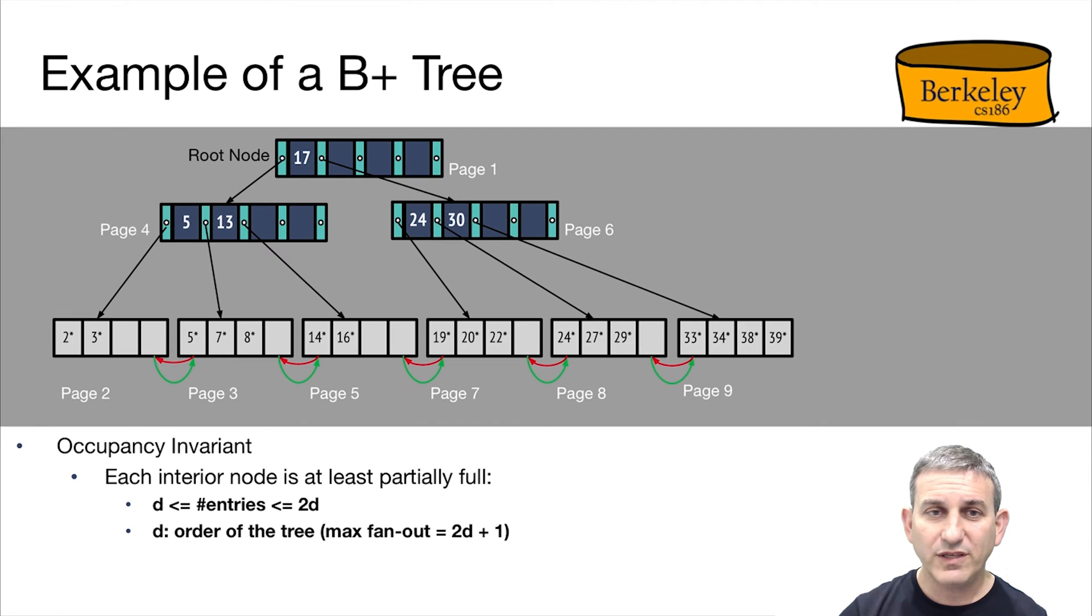Here's an example of a B-plus tree. One of the interesting facts about a B-plus tree is that it has an occupancy invariant. We didn't have this with ISAM, so it's an invariant rule that says the occupancy or the fill factor of each node must be at least one-half the capacity of the node. That is, the number of entries is between some number d and 2d, which is the maximum for the node. d is called the order of the tree. And the maximum fanout for a tree with order d is 2d plus 1, the plus 1 being the leftmost pointer on the page.